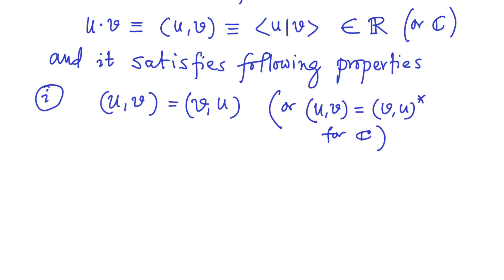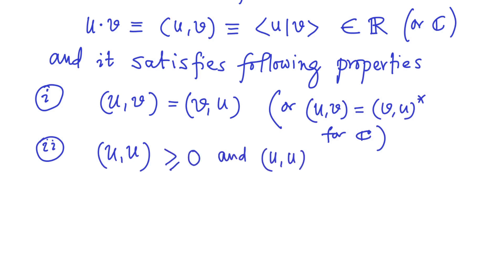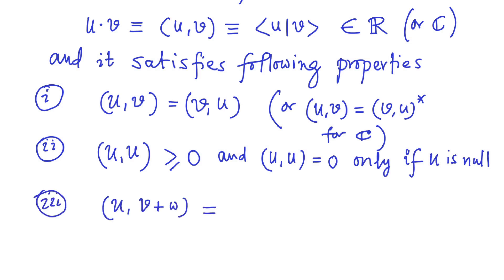The second property says the inner product of a vector u with itself is always greater than or equal to zero, and it is zero only if the vector is null. The third property that an inner product must satisfy is that if you take the addition of two vectors v and w and take a dot product with another vector u, it should be the same as the inner product between u and v plus the inner product between u and w.